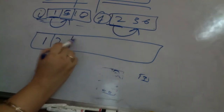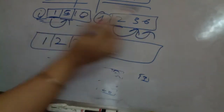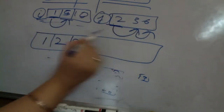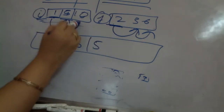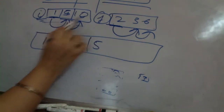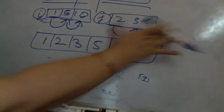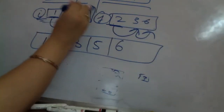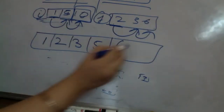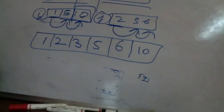Copy 2, move that index. Again check: 5 less than 3? No — copy 3, move the index. Again check: 5 less than 6? True — copy 5, move the index. Again check: 10 less than 6? No — copy 6, the array has ended. Whatever is left in the remaining array, copy the array as it is — so the merging is done. And finally you get the sorted array.